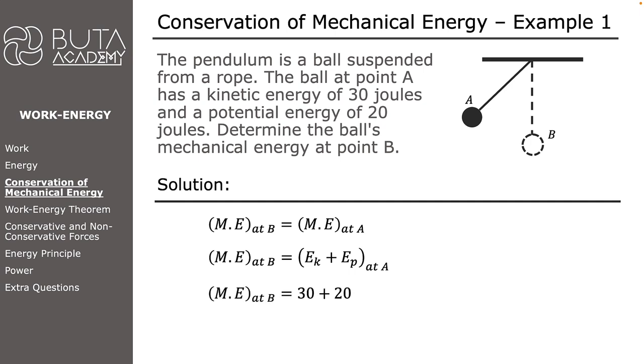Kinetic energy is 30 joules and the potential energy is 20 joules. The mechanical energy of the object at point A is 50 joules, which is the case for point B as well.